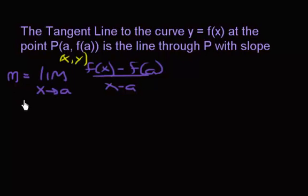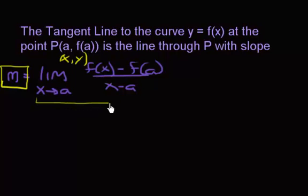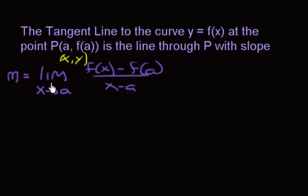The tangent line through P has a particular slope m — m is the letter we use to represent slope, which you've probably seen before. You may not have seen this slope formula before; we'll talk about it more in probably the second half of this video, so let's just ignore that part for now and take a look at a graph and draw a tangent line.